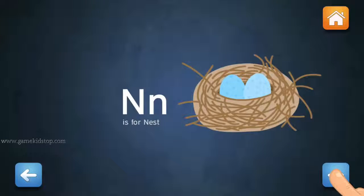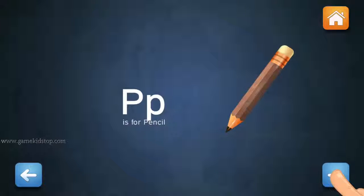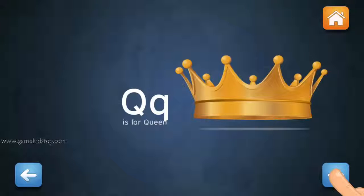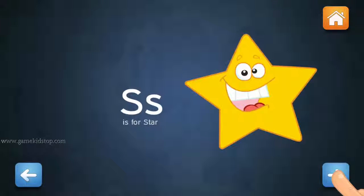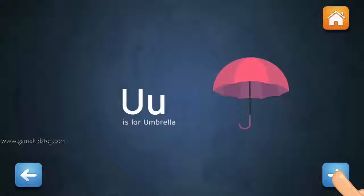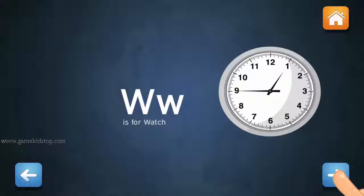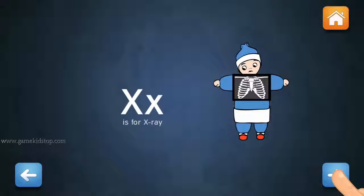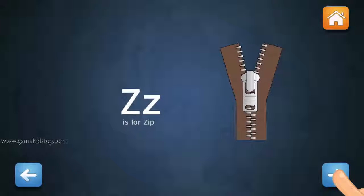N, N for Nest. O, O for Orange. P, P for Pencil. Q, Q for Queen. R, R for Robot. S, S for Star. T, T for Toy. U, U for Umbrella. V, V for Van. W, W for Watch. X, X for X-ray. Y, Y for Yak. Z, Z for Zip.